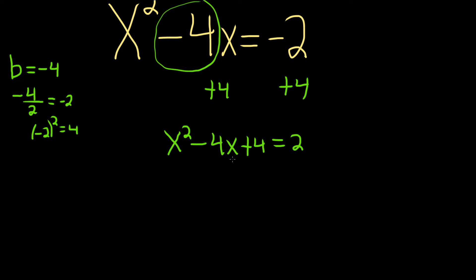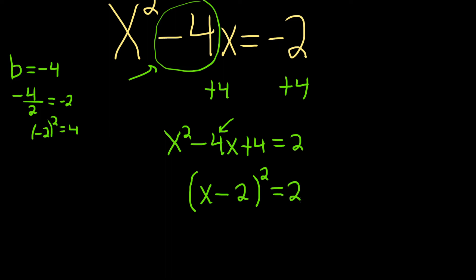This will factor like magic every time. It's going to look like parentheses x minus 2, and this is all from memory — I'm not actually thinking about factoring. Because we took this number, divided it by 2, squared it, and added it to both sides, this always works. You keep the sign, then take this number and divide by 2: 4 over 2 is 2. So it equals (x - 2) squared equals 2. It's 100% memory.